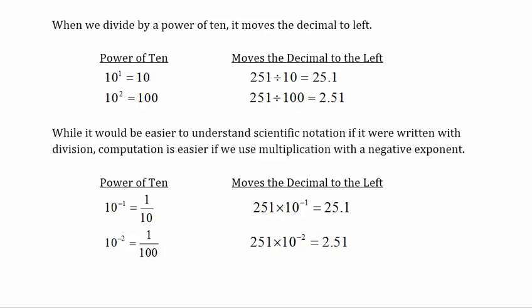When we divide by a power of 10, it moves the decimal place to the left, making the number smaller. Dividing 251 by 10 to the first power moves the decimal one place to the left, giving 25.1. Dividing by 10 squared moves the decimal two places to the left. This is the opposite of multiplying, which moved the decimal to the right.